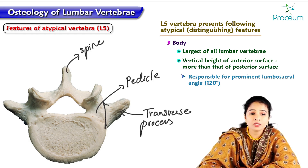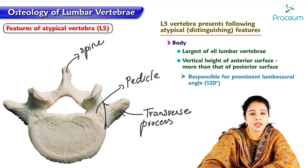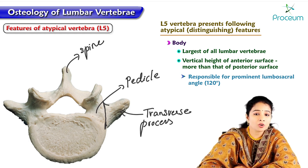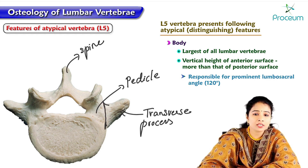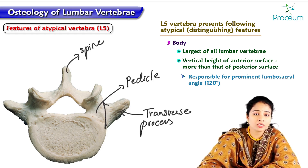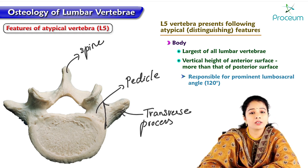This difference in anterior and posterior body height is responsible for a prominent lumbosacral angle of around 120 degrees. This is the angle between the long axis of the lumbar vertebra and the long axis of the sacral vertebra, which is called the lumbosacral angle.